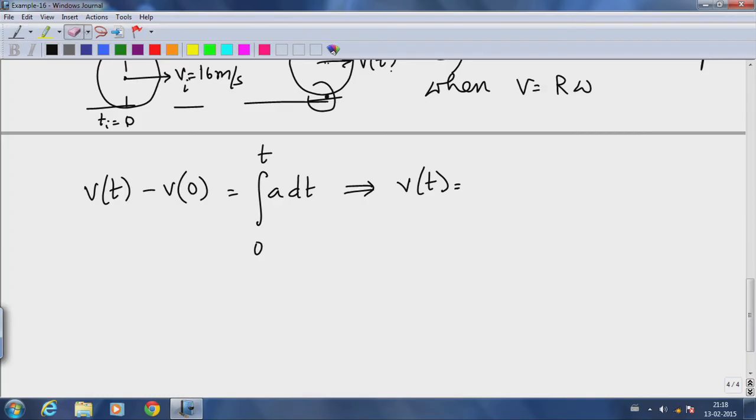We calculated the linear acceleration to be minus 5 meters per second squared, which implies v at any instant t minus 16 equals integral from zero to t of minus 5 dt, which also implies that v of t is 16 minus 5t. This has units of meters per second.